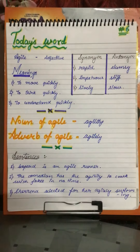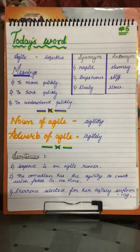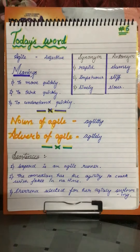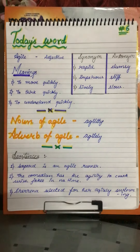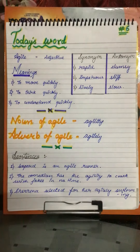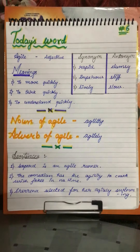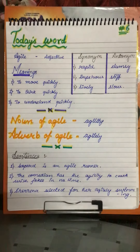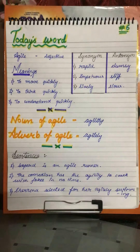There are three meanings of Agile. First is to move quickly — jaldi se thoda movement ya phir hattna hilna. Second, to think quickly — jaldi sochna. Third, to understand quickly — jaldi samajjana.